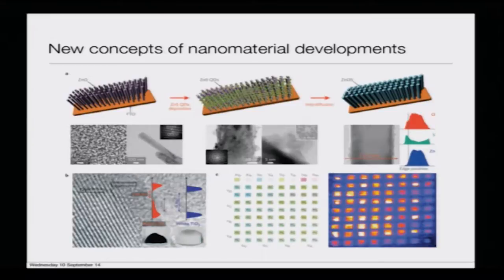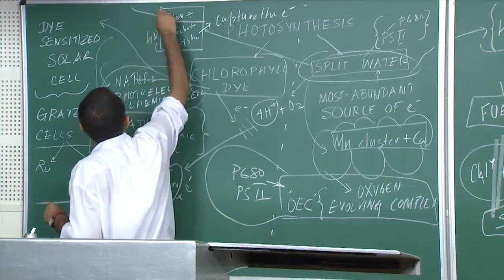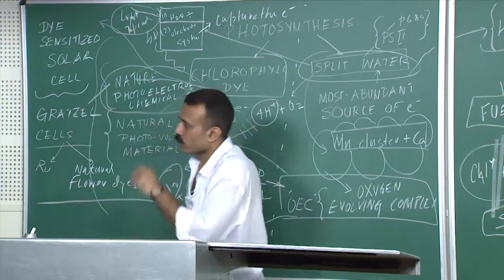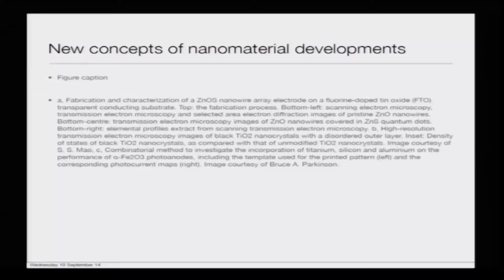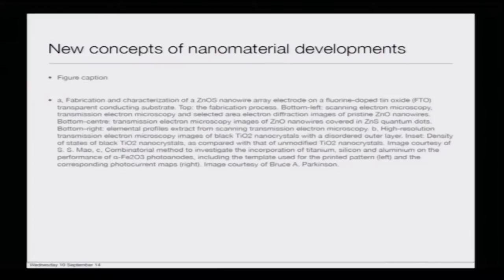Coming to new concepts of nanomaterial development: following design one, which is a zinc oxide nanowire electrode on a fluorine-doped tin oxide transparent conducting substrate — you need different kinds of transparent conducting substrates because this process is light-dependent; light is the source of energy. There are different kinds of fluorine-doped oxide substrates being developed over time that act as transparent conducting substrates. There is a lot of work currently going on with zinc oxide surfaces and developing different kinds of materials that are transparent enough to allow this process to take place.